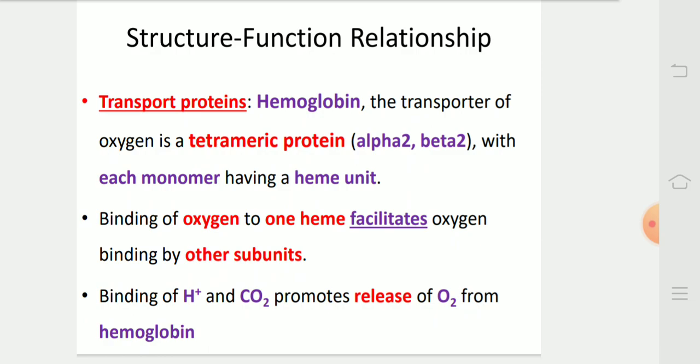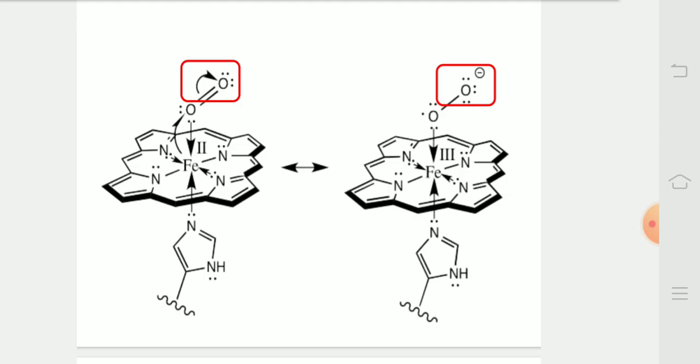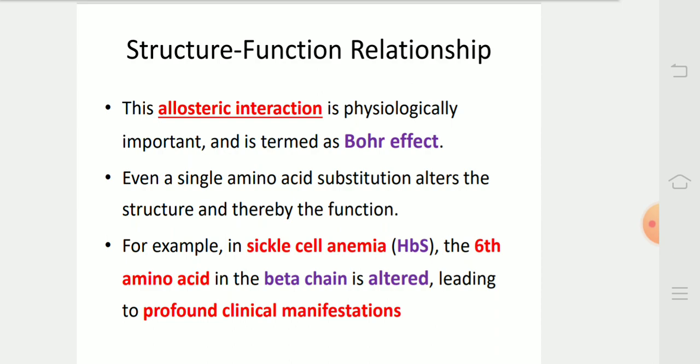Transport proteins. Hemoglobin, the transporter of oxygen, is a tetrameric protein which contains alpha-2 and beta-2 chains. The binding of oxygen to one heme facilitates oxygen binding to other subunits. Binding of H+ and CO2 promotes release of O2 from hemoglobin. In this diagram, we can see how the hemoglobin works. This allosteric interaction is physiologically important and is termed as Bohr effect. Even a single amino acid substitution alters the structure and thereby function.